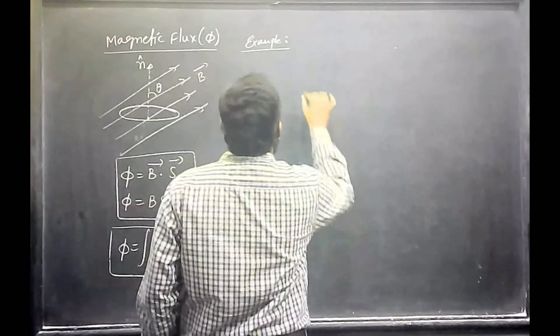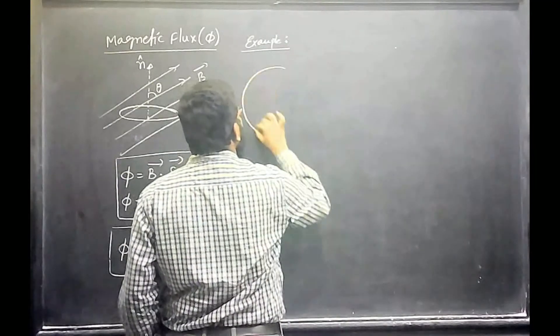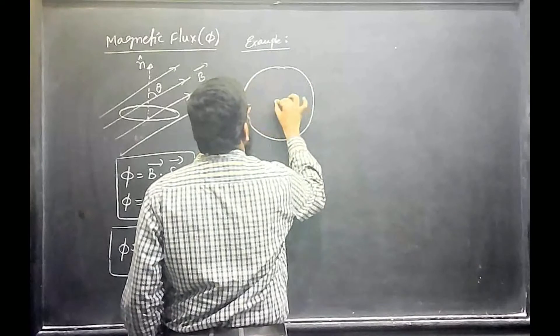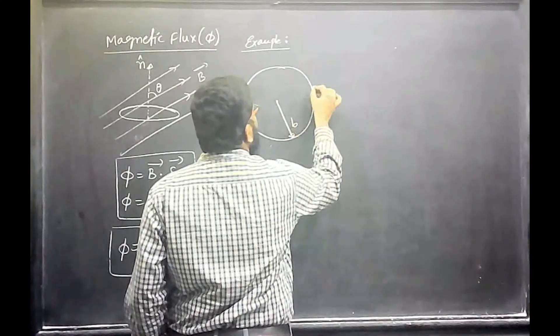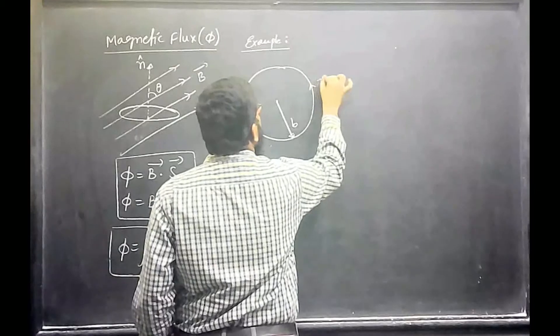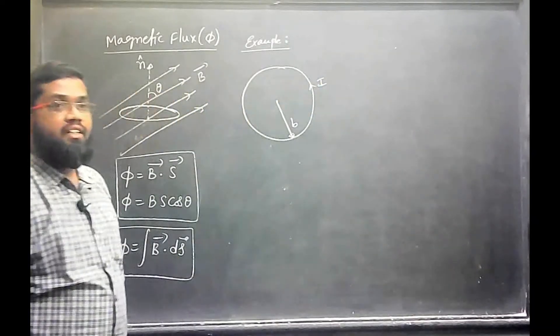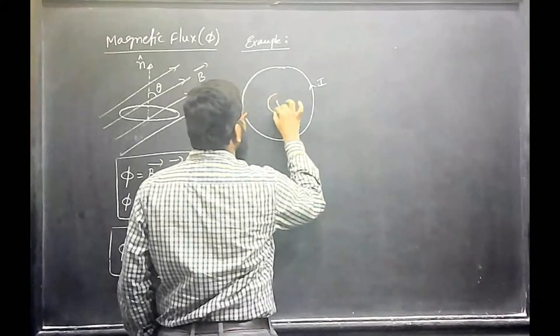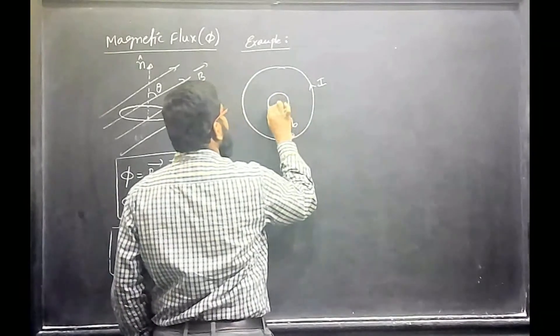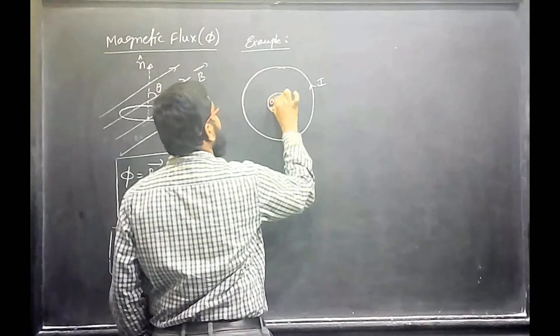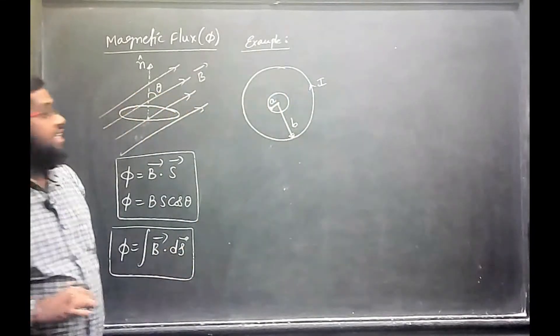Let us say a ring is placed here, this is the ring of radius B, which carries a current I in the counter clockwise direction. Now, a small loop is placed here concentric whose radius is a.